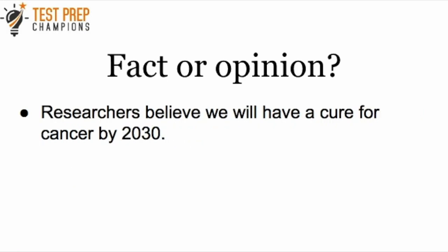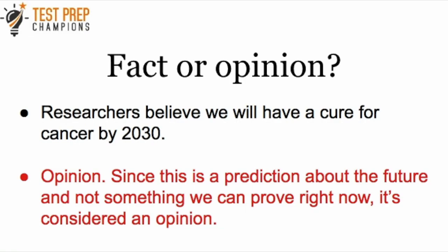'Researchers believe we will have a cure for cancer by 2030.' This is an opinion. A prediction about anything is generally going to be considered an opinion. We can't prove right now if this is going to be true or false. Even if an expert or researcher believes something is going to happen in the future, that is still an opinion — it might be an informed opinion based on science, but since it's a prediction about something in the future, we would still consider this an opinion.